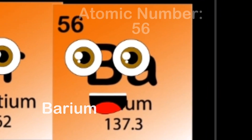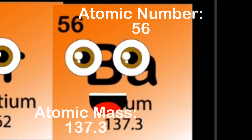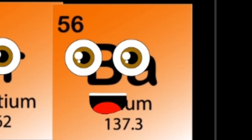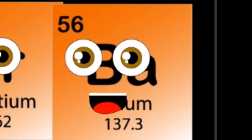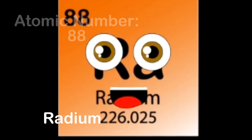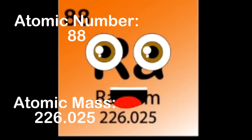Ba is my symbol on my periodic square. I'm the fifth element in group two, in case you want to share. My name is Radium, my atomic number is 88, 226 is my atomic mass — now isn't that great.